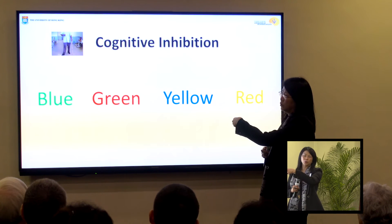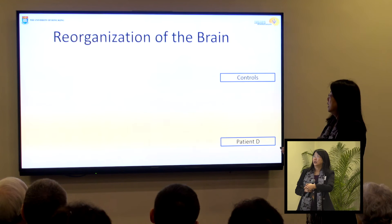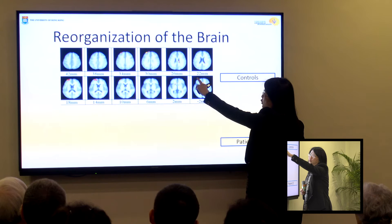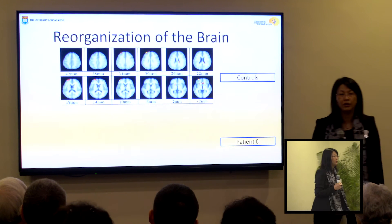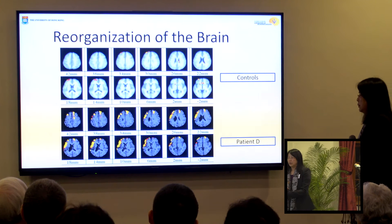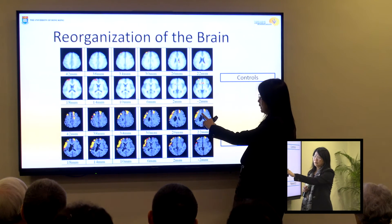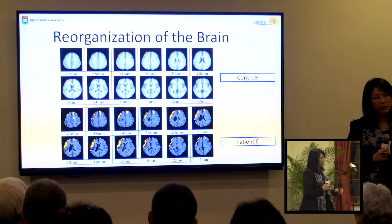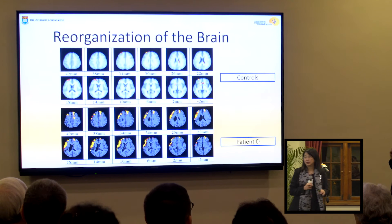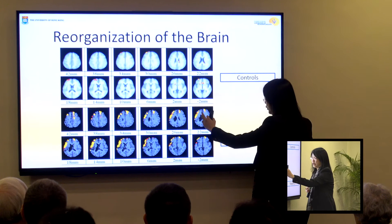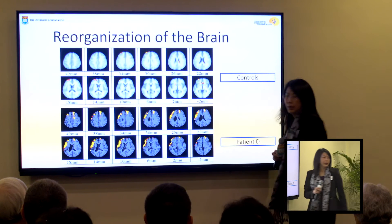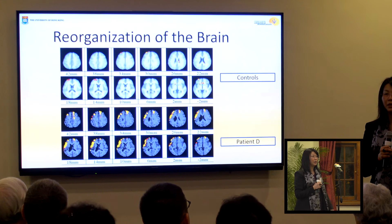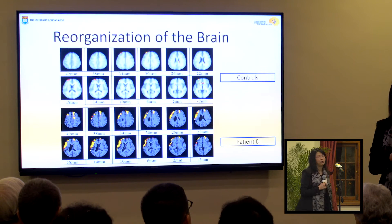I scanned her doing this task. We know that for this task a particular region called the anterior cingulate is very important. But looking at her brain, we don't see activity there when she's performing it — because that part was damaged by the hemorrhage. Yet she performed behaviorally the same as the control group, meaning something must have happened in the brain to allow her to do it.